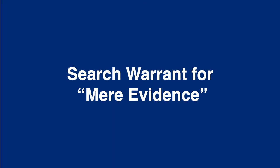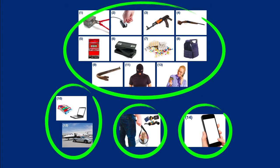In this screencast, we'll discuss the Texas Code of Criminal Procedure requirements for search warrants for mere evidence. Be forewarned, this is potentially the most confusing part of the Code of Criminal Procedure. Just to refresh your memory, in a previous screencast we noted the best way to understand this information is to mentally organize all of the things the Code of Criminal Procedure permits a search warrant to search for into four groups.